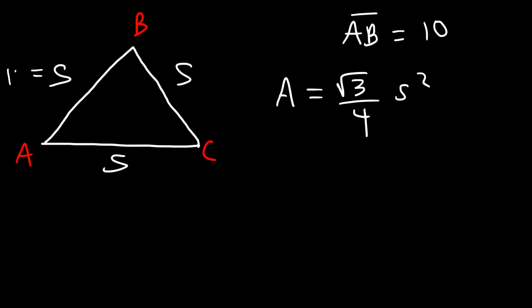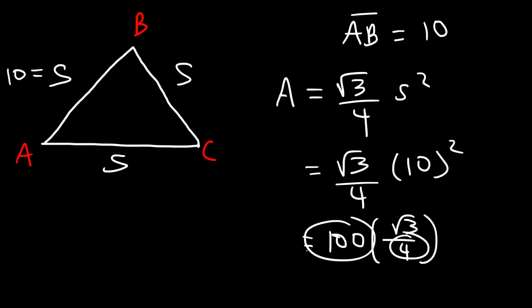So s in this example is 10. So it's the square root of 3 over 4 times 10 squared. Now 10 squared is 100. And if we take 100 and divide it by 4, that's 25. So the area, the exact answer, is 25 square root of 3. Now as a decimal, that's 43.3 square units.